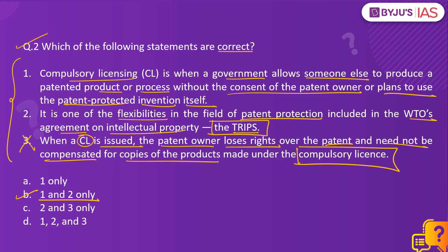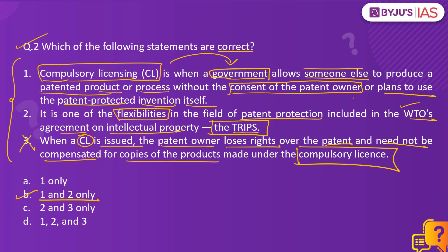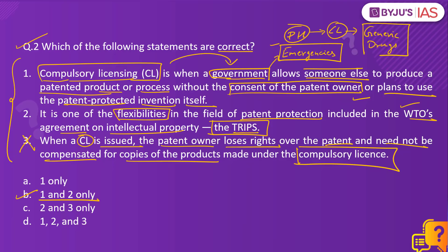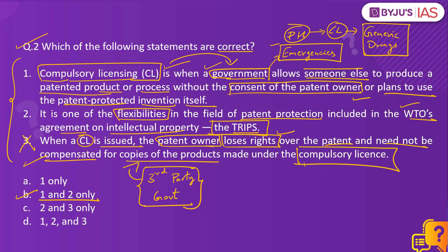Under the Trade-Related Aspects of Intellectual Property Rights (TRIPS) agreement of the WTO, a flexibility known as compulsory licensing allows a government to authorize a third-party manufacturer to produce a patented product or process without obtaining the consent of the patent owner. This provision helps countries deal with emergencies, especially public health emergencies, where they can issue a compulsory license to authorize domestic companies to produce generic drugs, ensuring access to essential patented medicines that would otherwise be very expensive.